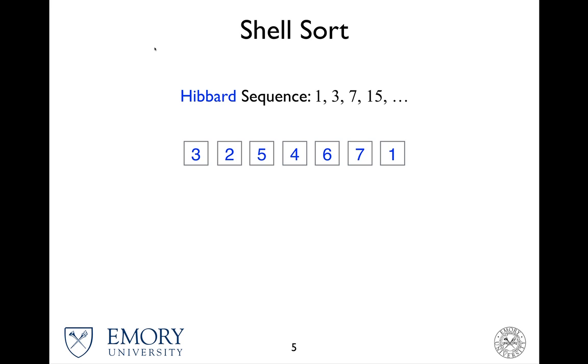So for this example we're gonna use what's known as a Hibbard sequence: 1, 3, 7, 15, which is 2 times the previous value plus 1.